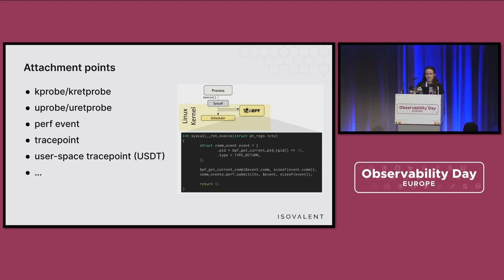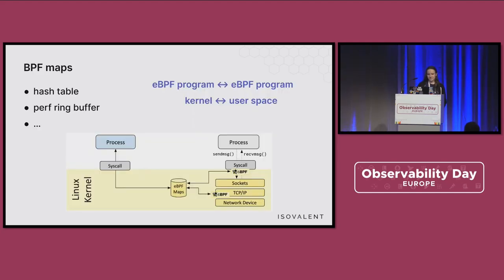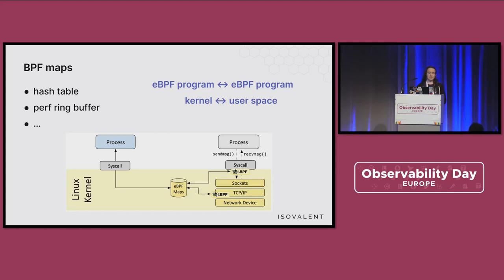To be actually useful, any program needs something to store its state. In the eBPF world, the role of the database is served by BPF maps. BPF maps are basically key-value stores stored in kernel memory. There are many different kinds — hash, table, perf ring buffers, and many others — but all are essentially key-value stores that can store some state of the world.